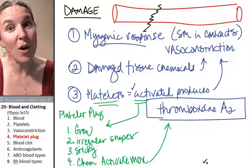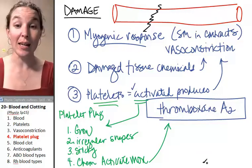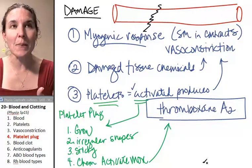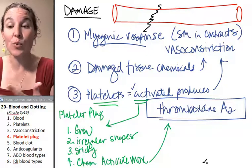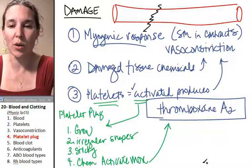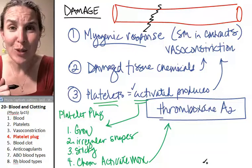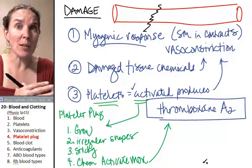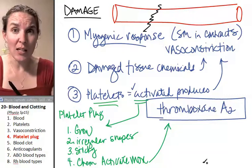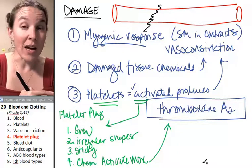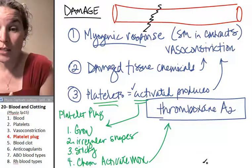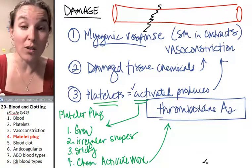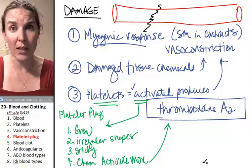One of those chemicals is thromboxane A2. Interestingly, the platelets, when they become activated, produce this thromboxane A2, which causes vasoconstriction and causes more platelets to activate. More platelets become activated and produce more thromboxane A2, which causes more vasoconstriction and causes more platelets to activate.